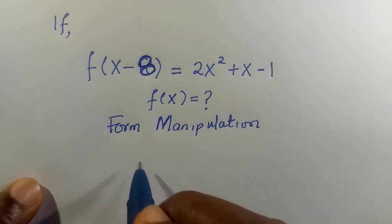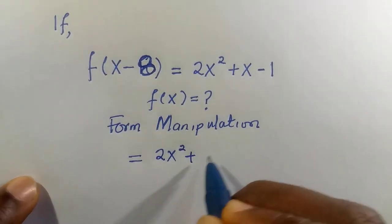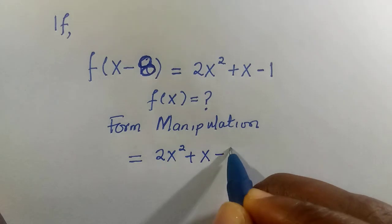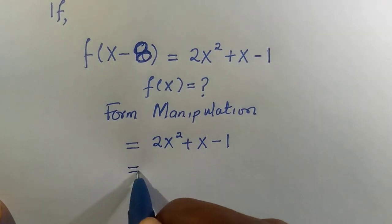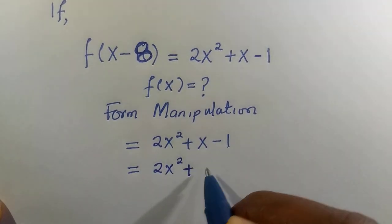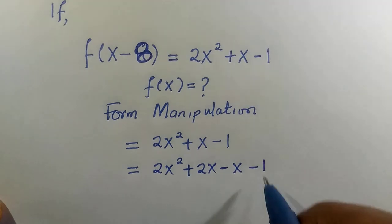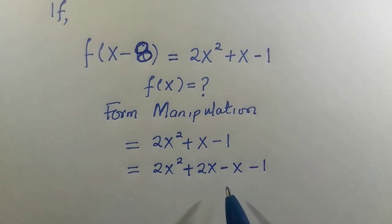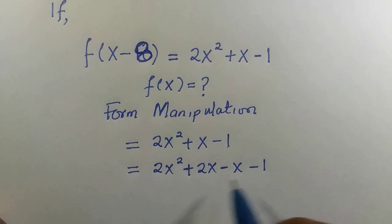We consider the right-hand side, which is 2x² + x - 1. This is a quadratic and we can factorize it into 2x² + 2x - x - 1. We consider the coefficient 2 multiplied by -1, which gives us -2. But this is -1 here. How do we get that -2? It's very simple.